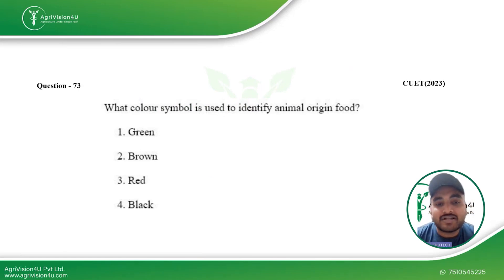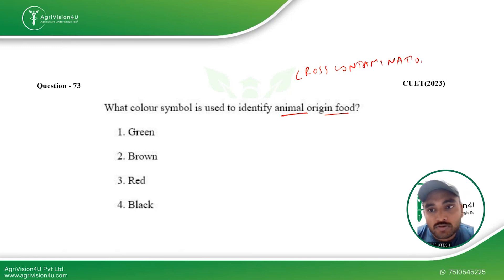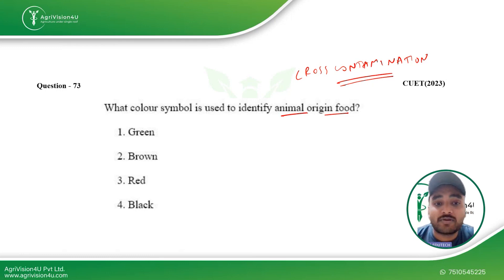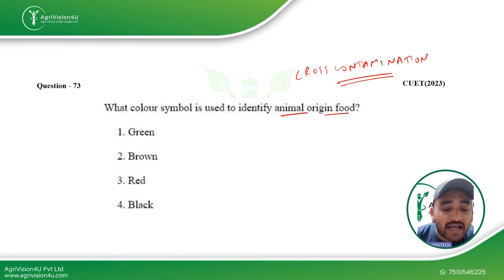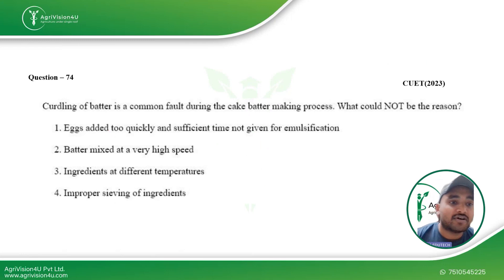The first question is: what color symbol is used to identify animal origin food? Color coding is used in industries to prevent cross contamination — that is, to prevent the transfer of microorganisms between different types of food. If vegetarian and non-vegetarian food are prepared on the same premises, chopping boards and knives must be separated. For packaged food, animal origin food is labeled with a brown color triangle, while plant origin food uses a green colored dot. So the answer is brown color.